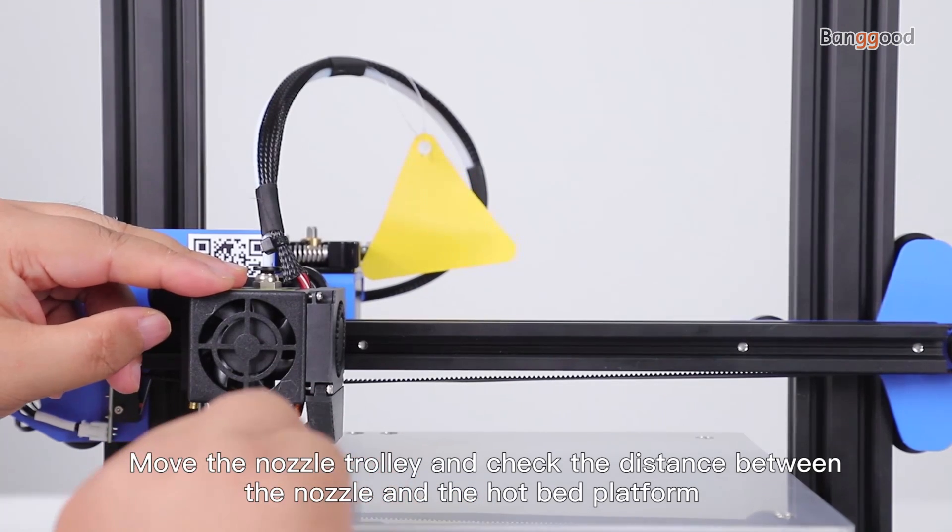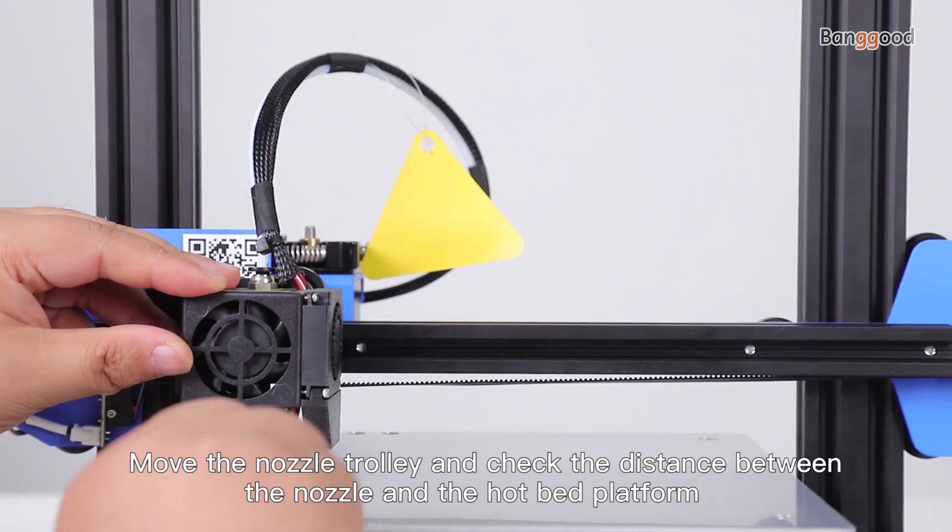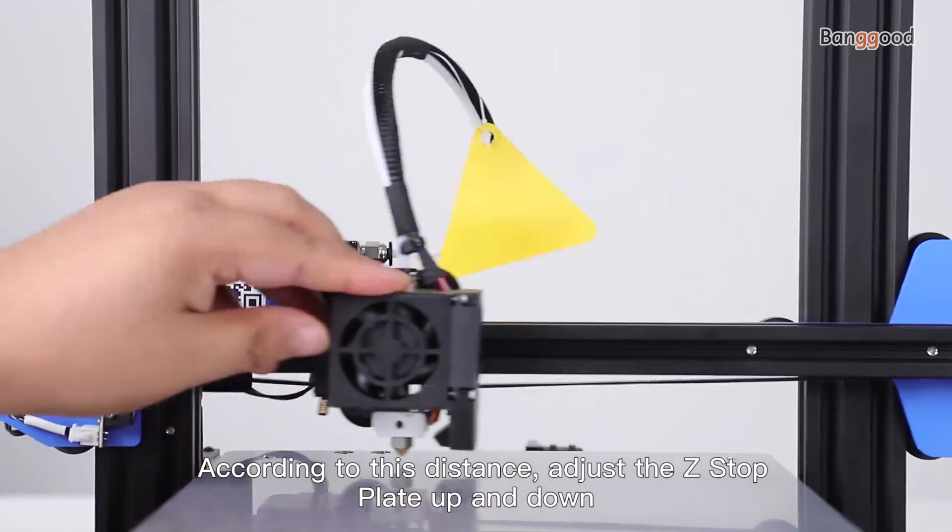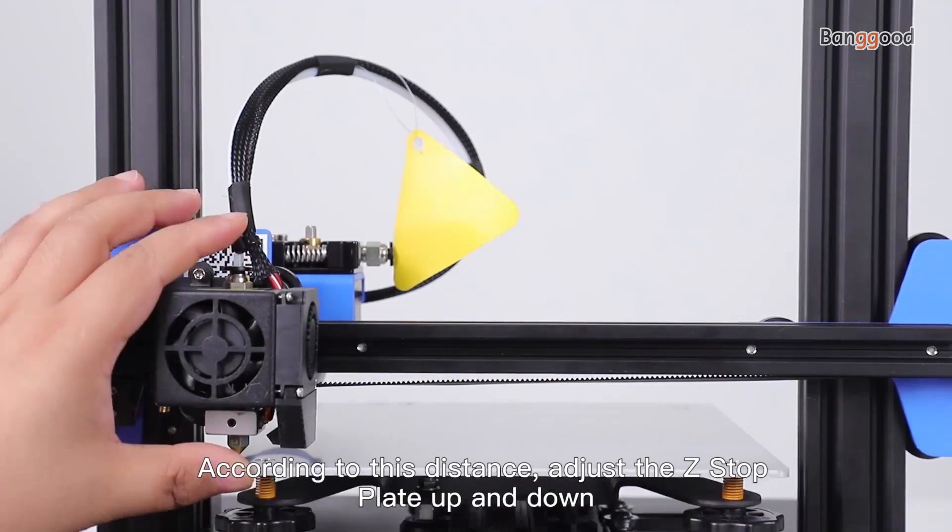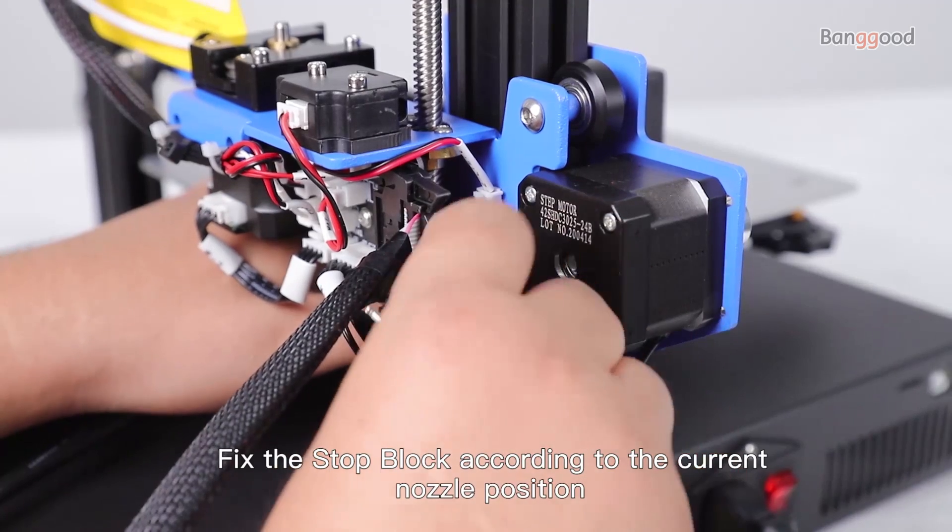Move the nozzle trolley and check the distance between the nozzle and the hotbed platform. According to the distance, adjust the Z-stop plate up and down. Fix the stop block according to the current nozzle position.